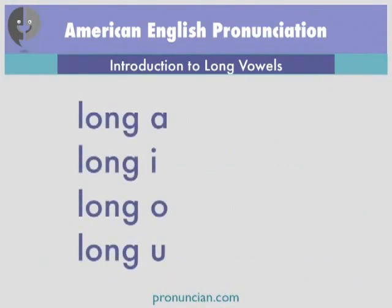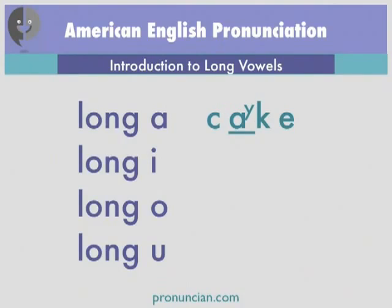Four of the five long vowel sounds are pronounced as two-sound vowels. The long A sound ends in a brief Y sound: A. Listen closely — cake, A, cake.